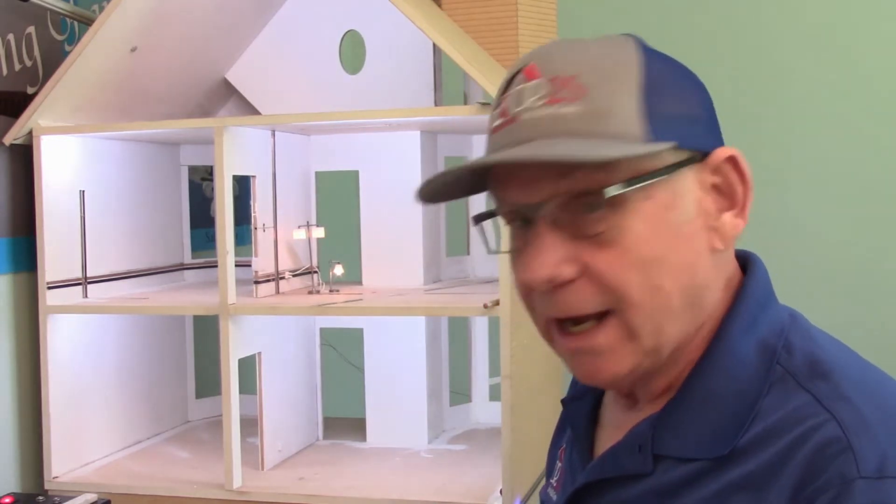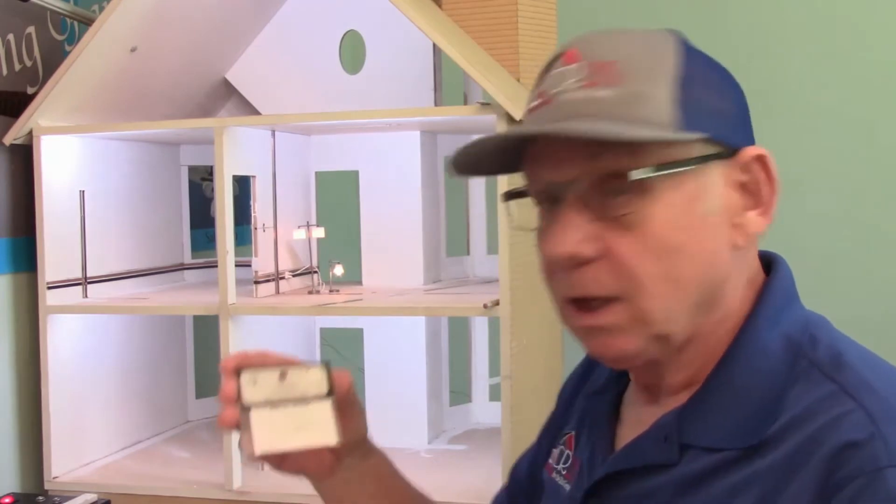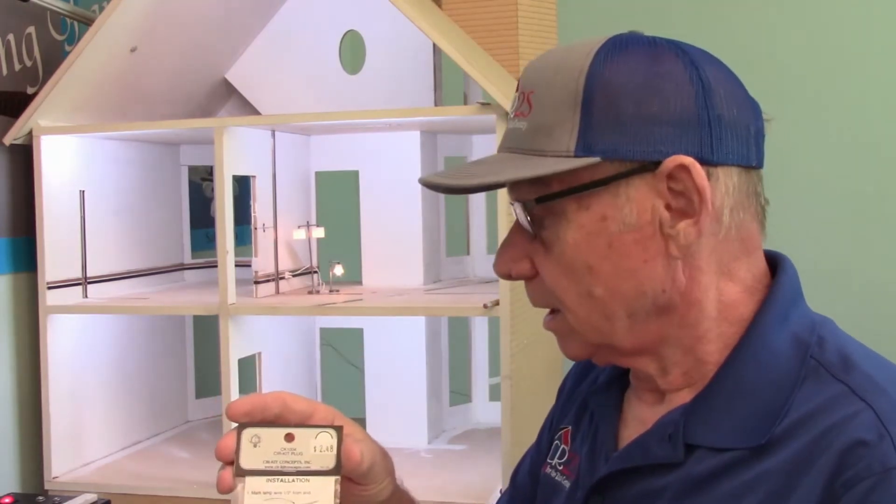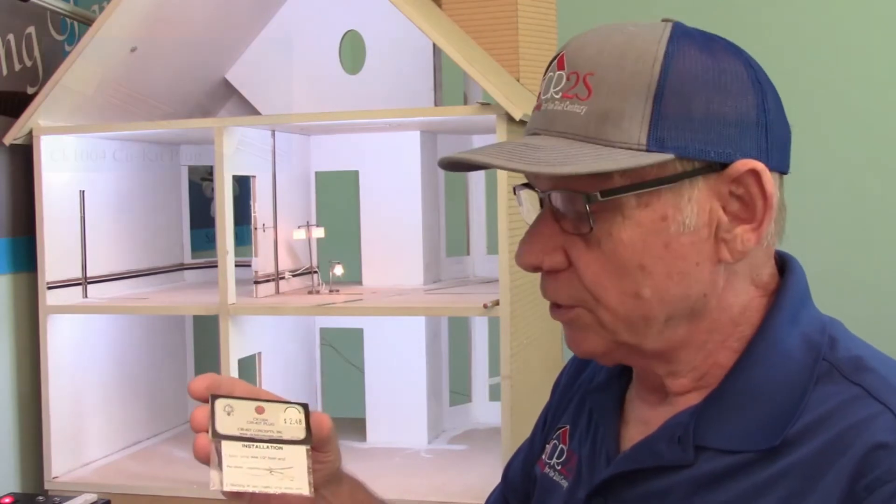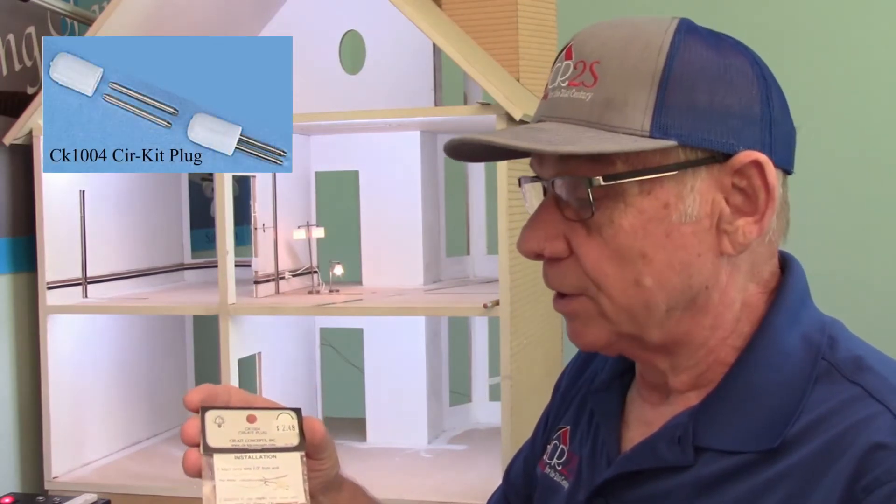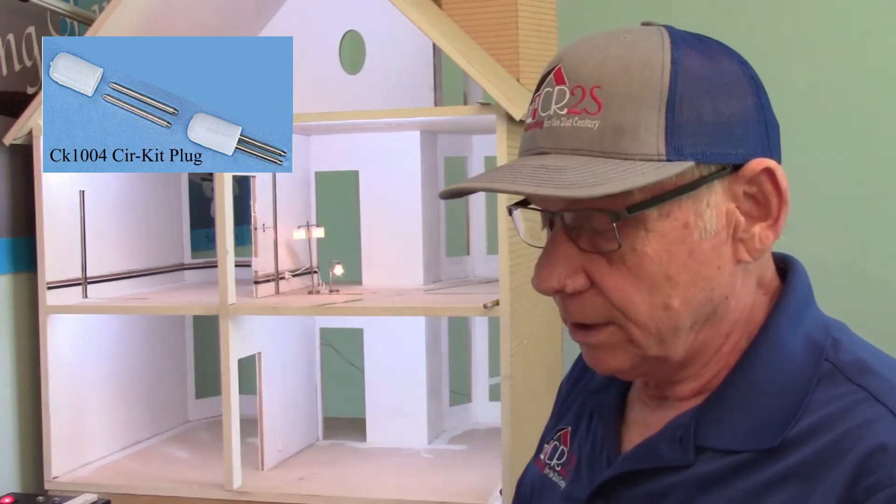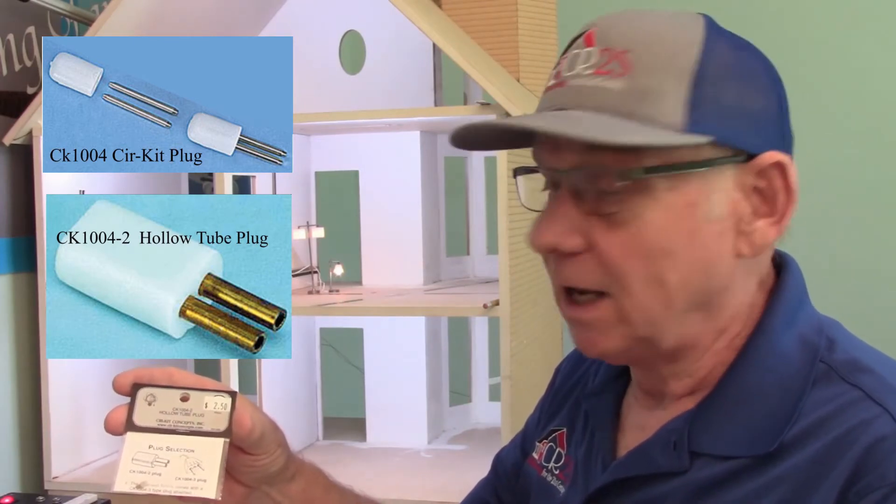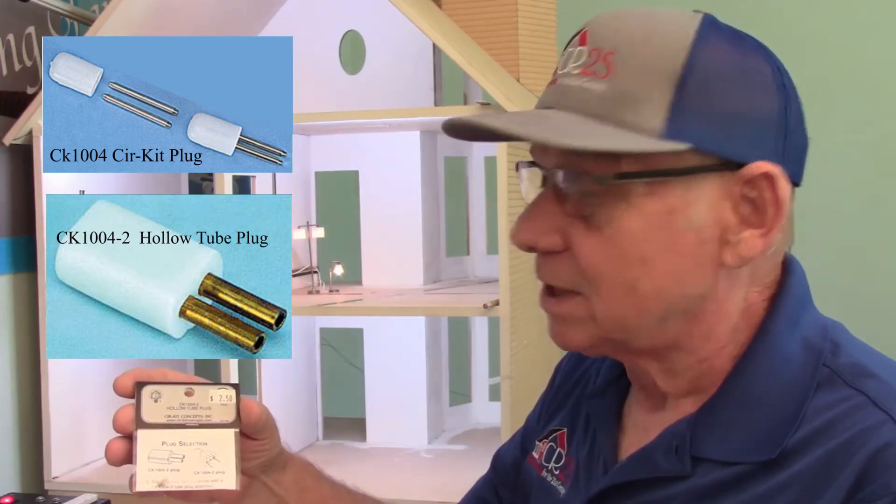Circuit actually has two different plugs for the lamp plugs. The first one is their standard lamp plug, CK1004. The second one is the same size that fits into the outlet we put into the dollhouse already, and this is their hollow tube plug, CK1004-2.